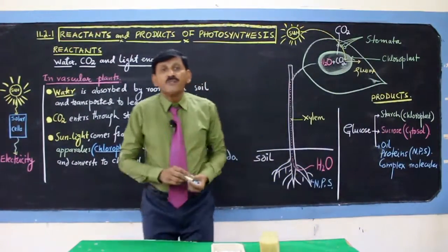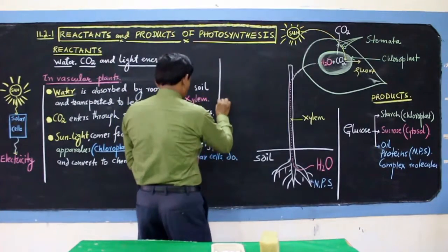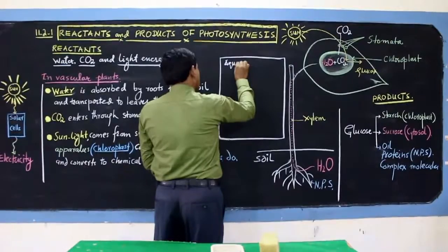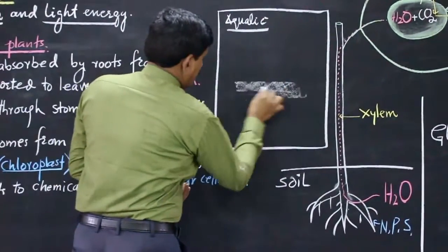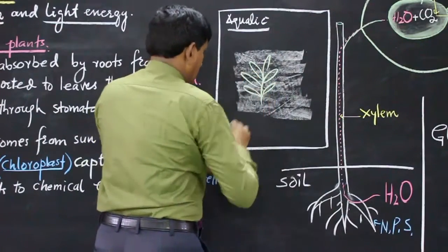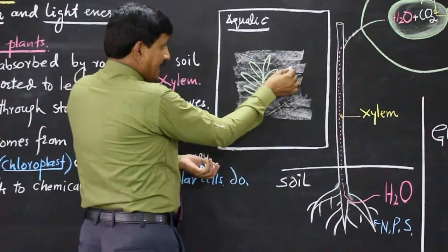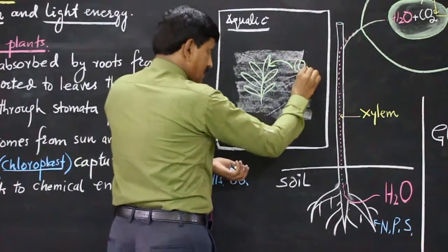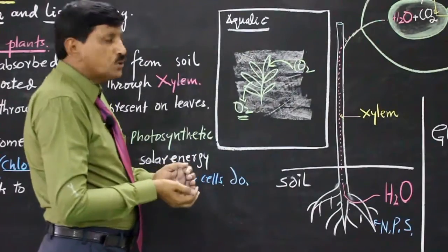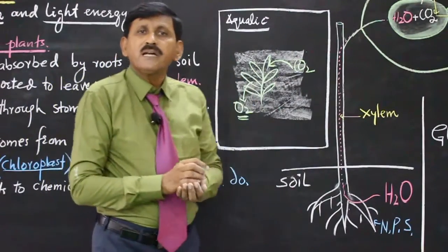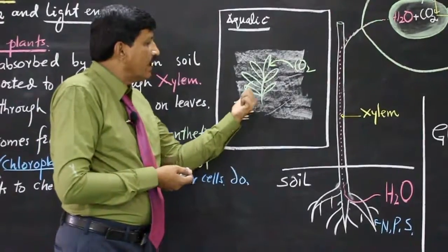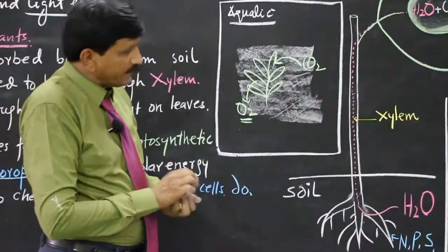In the case of aquatic organisms — aquatic organisms mein, this is the water, and aquatic plants absorb carbon dioxide from surrounding water, and also they release oxygen into surrounding water. To jo bhi aquatic organisms hain, ya unicellular hain, vo carbon dioxide bhi water se lete hain, aur during the process of photosynthesis, jo oxygen release ho rahi hai, vo bhi diffuse ho rahi hai into the water.